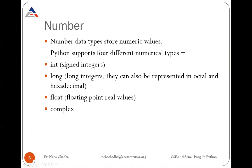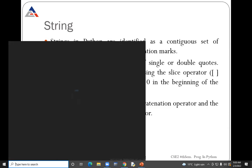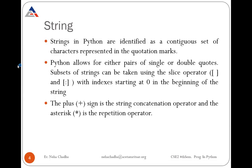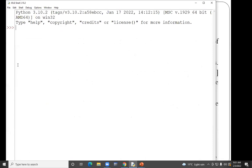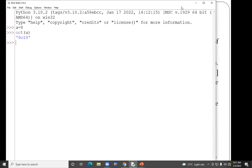In the number type, we have covered how you can give integer value and float value. Today we will cover how we can represent our data in octal form, binary form, or in complex form. If you are writing any value, suppose I am taking a as 8 and I want to give the octal value of 8, then I will use the OCT function.